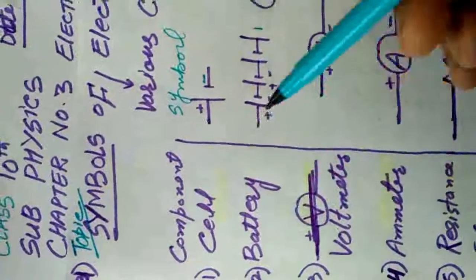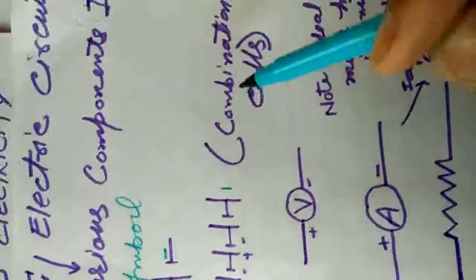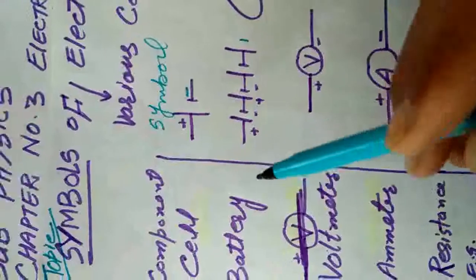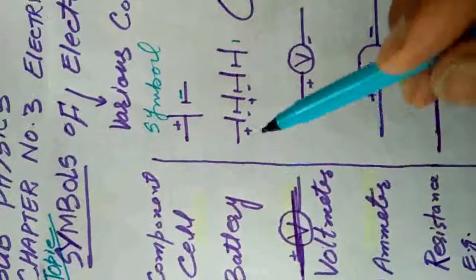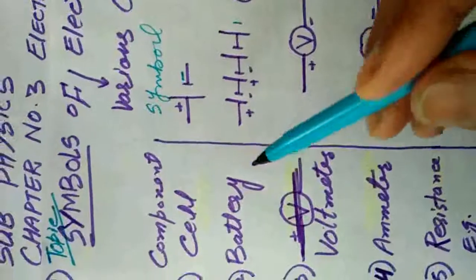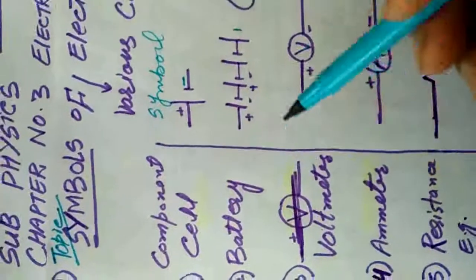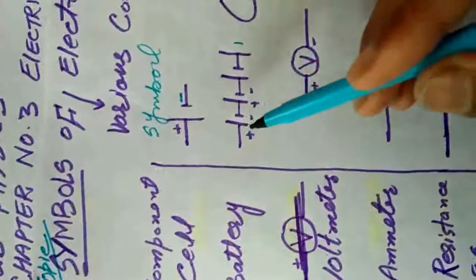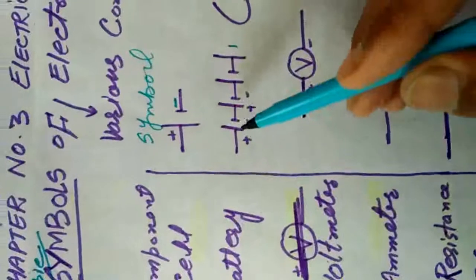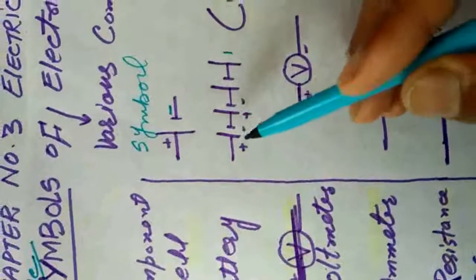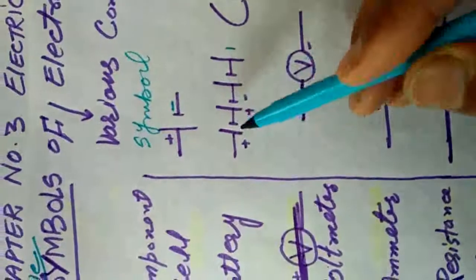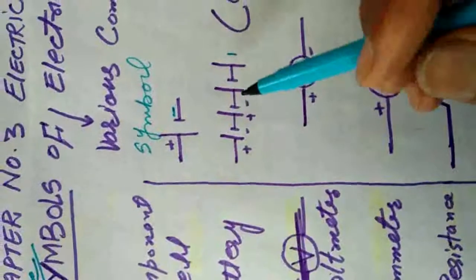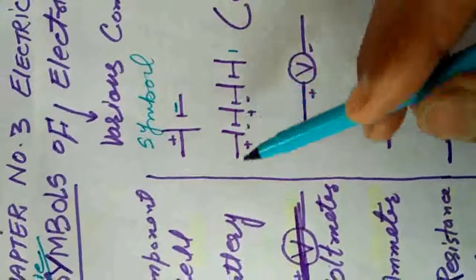The second component is the battery. A battery is a combination of various cells — two or more cells form a battery. We represent the battery by this symbol: plus-minus, plus-minus — these are the cells, and when we connect and combine them, it forms a battery.